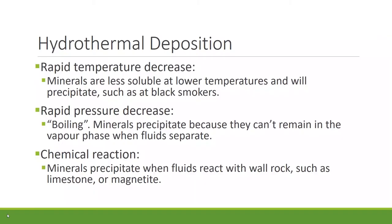Rapid pressure decreases take place when rocks fracture or when fluids enter open cavities, which significantly reduces the lithostatic pressure exerted on the fluid. Rapid pressure decreases result in phase separation of the mineralized fluid into a liquid and a vapor phase — a process commonly referred to as boiling. Elements can't remain dissolved in the vapor phase, resulting in oversaturation of the liquid phase and subsequent precipitation. Minerals can also precipitate when fluids react with wall rocks such as limestone or iron-bearing rocks that contain magnetite. Gold, commonly transported as a bisulfide complex, is precipitated when the gold-bearing fluid interacts with magnetite; the sulfur reacts with magnetite to form pyrite, and the gold, which is no longer soluble, precipitates out of solution.